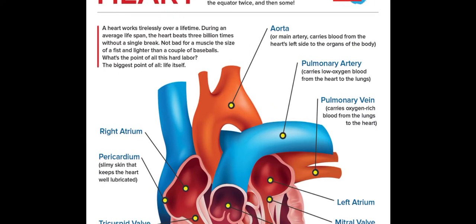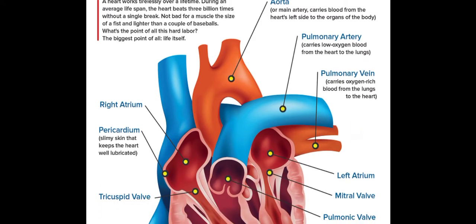The aorta carries blood from the left side of the heart to the organs of the body — organs like the liver and many others. Now what about the pulmonary artery? The pulmonary artery carries low-oxygen blood from the heart to the lungs.